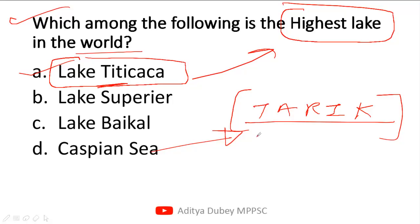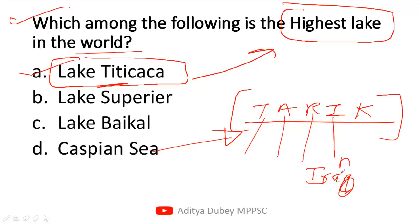The trick for the 5 countries sharing a border with the Caspian Sea is TARIK — T-A-R-I-K. T stands for Turkmenistan, A stands for Azerbaijan, R stands for Russia, I stands for Iran. Don't confuse Iraq and Iran — it is Iran. Remember: Iran ends in 'AN' and Caspian also ends in 'AN'. Iraq will be given as an option but Iraq does not share a border with the Caspian Sea. K stands for Kazakhstan.